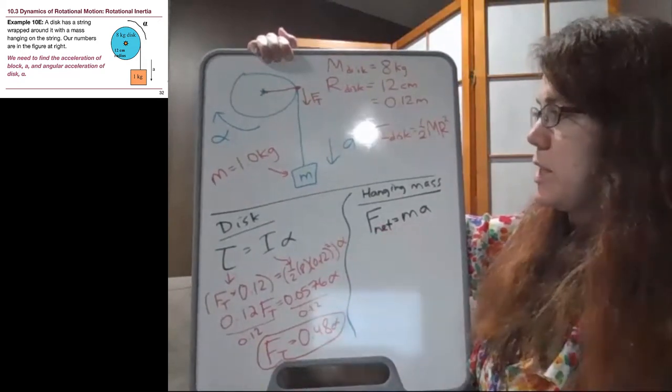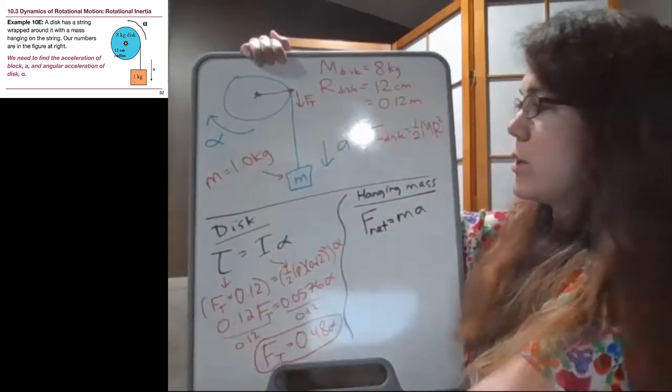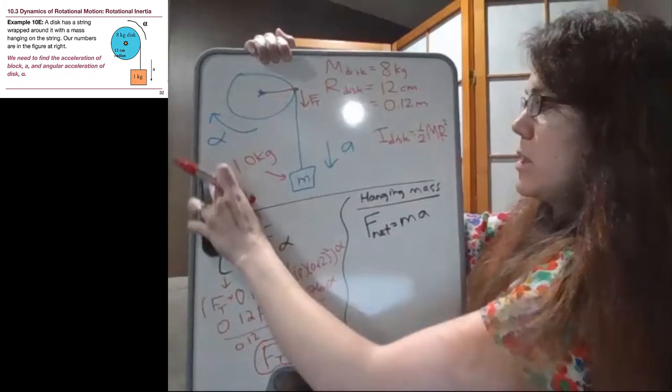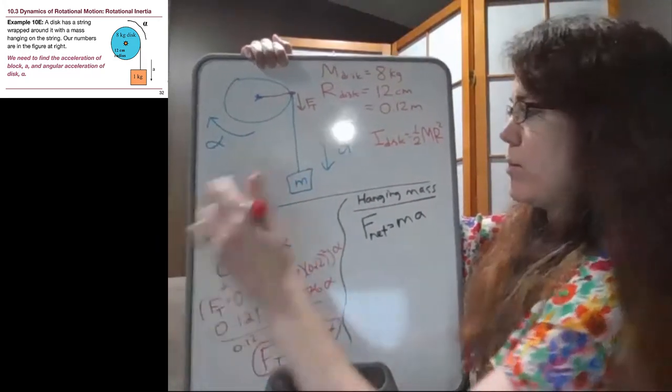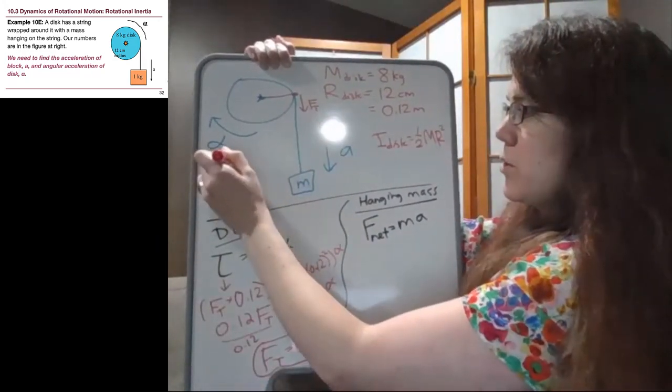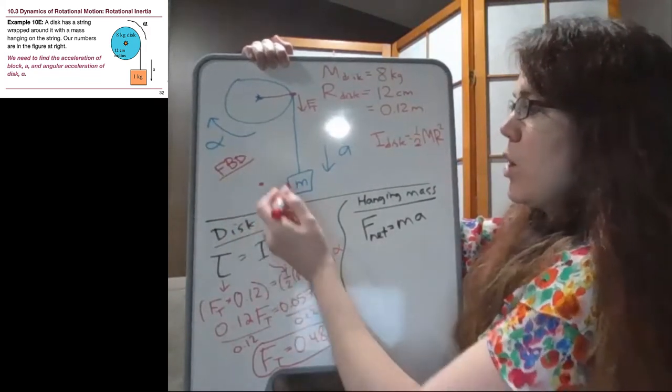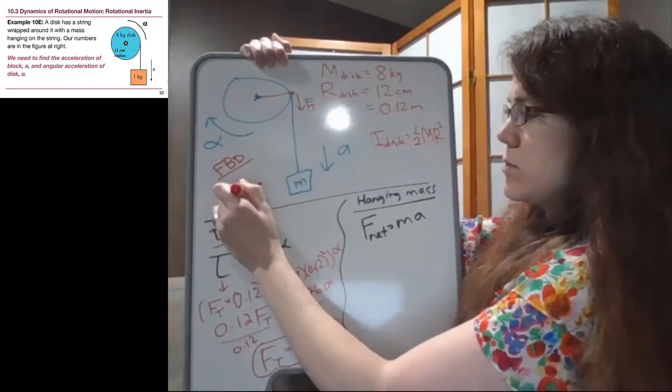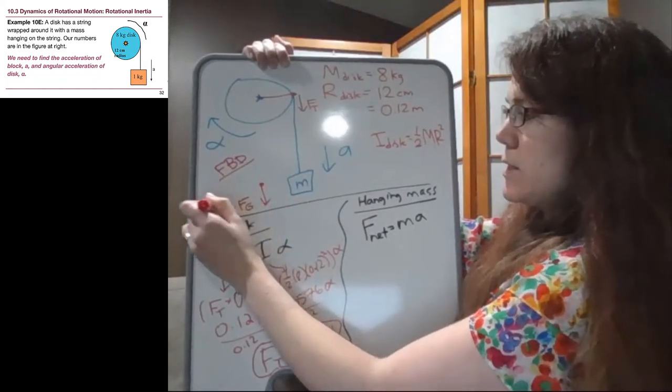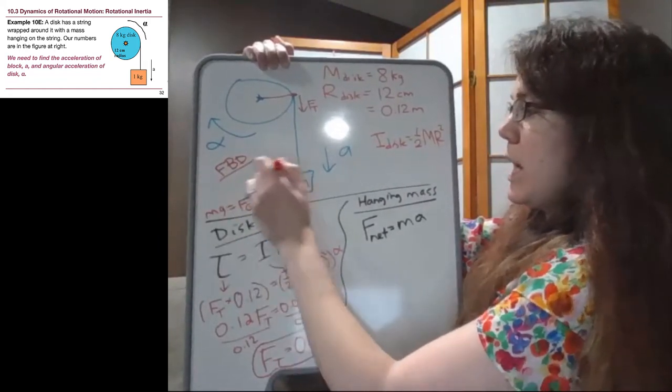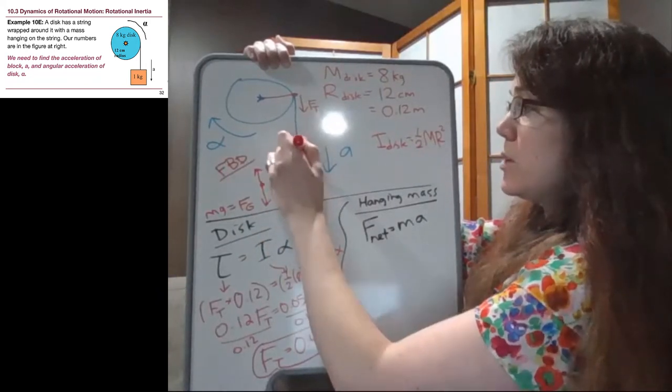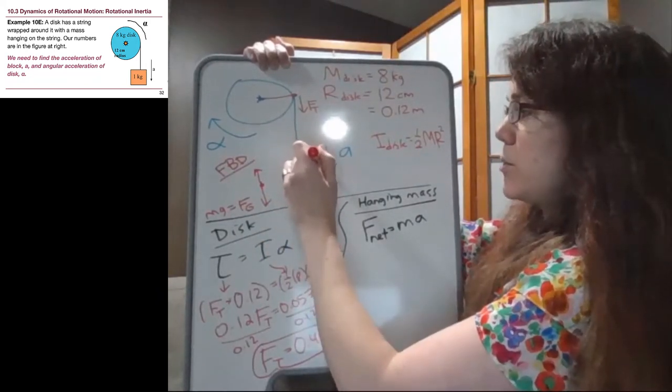For the hanging mass here, if we think about the forces acting on this hanging mass, and I'm going to draw the free body diagram, the force diagram up here. So free body diagram, just like chapter four, we have gravity down. And that's equal to mg. And we have the tension, the tension over here is pulling up on the object.